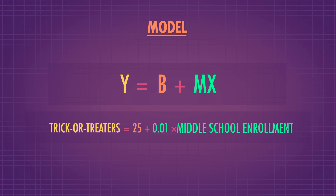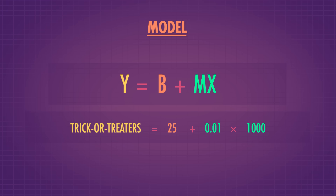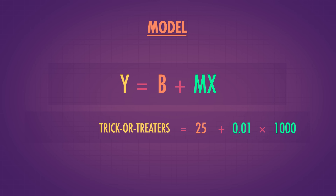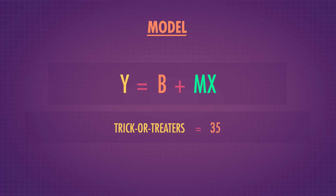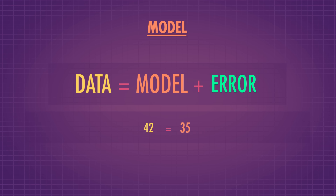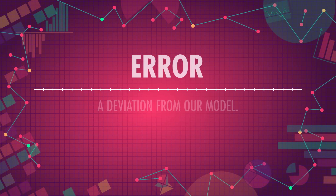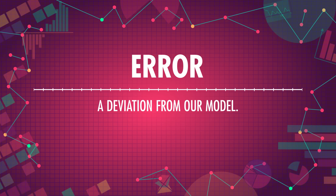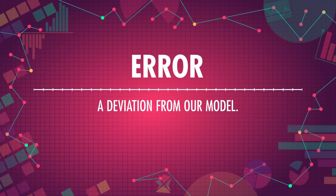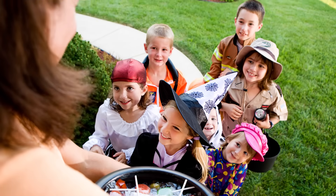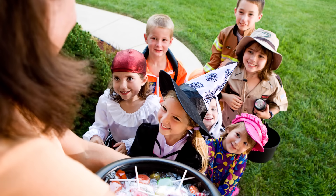So this would be my model. There were about a thousand middle school students nearby last year, so based on my model, I predicted that I'd get 35 trick-or-treaters. But reality doesn't always match predictions. When Halloween came around, I got 42 trick-or-treaters, which means that the error in this case was 7. Error doesn't mean that something's wrong per se — we call it error because it's a deviation from our model. The data isn't wrong; the model is. These errors can come from many sources, like variables we didn't account for in our model, including candy-crazed kindergartners from the elementary school, or just random variation.